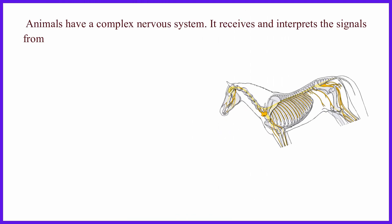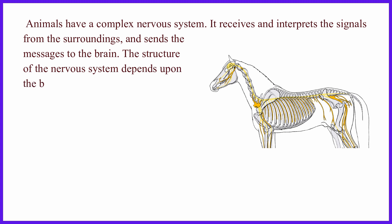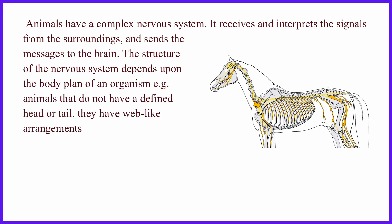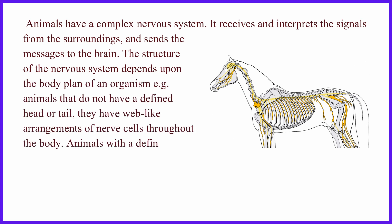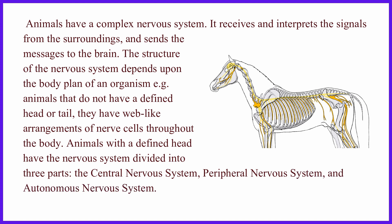Animals have a complex nervous system. It receives and interprets the signals from the surroundings, and sends the messages to the brain. The structure of the nervous system depends upon the body plan of an organism. For example, animals that do not have a defined head or tail have web-like arrangements of nerve cells throughout the body.